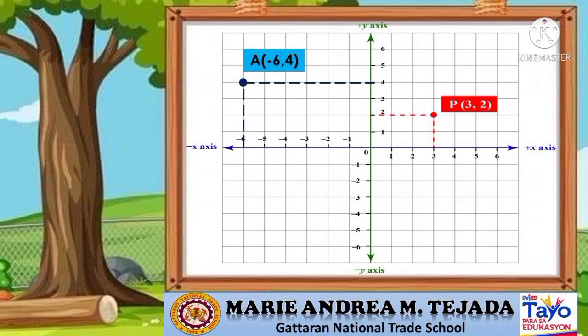Next, we are going to plot point A with coordinates negative 6 and 4. First, we locate the X coordinate, which is negative 6 on the X axis, followed by our Y coordinate, which is positive 4. The intersection of negative 6 and 4 is now the location of point A. Next, we are going to plot point N with coordinates negative 3 and negative 3. Let's plot first the X coordinate on the X axis, which is negative 3, and our Y coordinate on the Y axis, which is negative 3. The intersection is now the location of point N with coordinates negative 3 and negative 3.